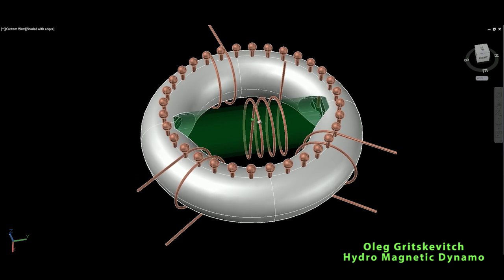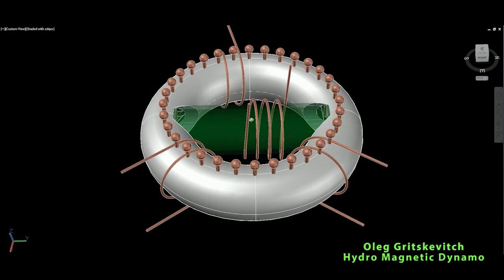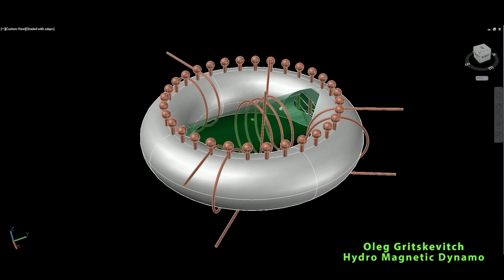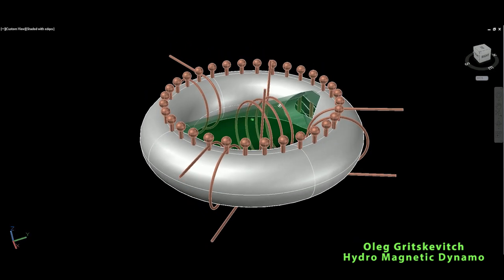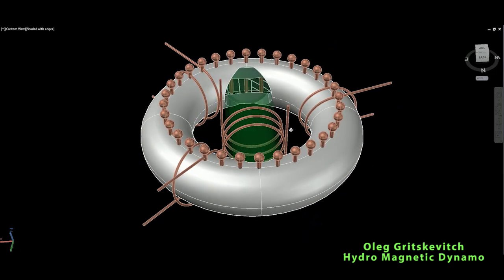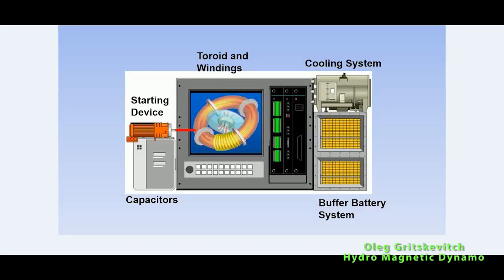32 electrodes made from hard alloy material are inserted into the toroid at equal distances and connected to a power supply. Additional stimulation windings are also connected to the power supply. It's a very simple device in theory.